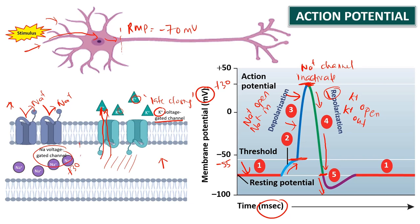This can reach as low as negative 90 millivolts, which is what we call hyperpolarization — the membrane goes beyond the resting membrane potential. We also call this stage the refractory period, where the neuron is unresponsive to further stimulation. Now all the sodium and potassium channels are closed, and the membrane returns to the resting state. This is accomplished by the actions of the sodium-potassium pump, which redistributes ions and restores the resting membrane potential to negative 70 millivolts.